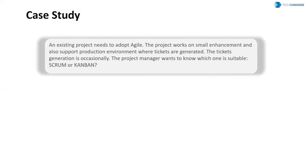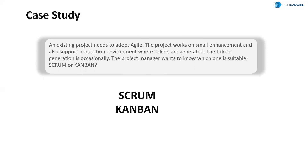Consider a scenario: an existing project needs to adopt Agile. It works on small enhancements and also supports a production environment where tickets are generated occasionally. The project manager wants to know which framework is suitable — Scrum or Kanban. If the project can plan for deliveries at regular intervals of two to three weeks and commit to that, the team can go with Scrum, where deliverables are delivered at the end of every Sprint. This gives the team breathing space, and the predictability of team capacity is high. But if the project demands frequent releases every week or has to support ad hoc requests, Kanban is the better choice — provided the team is self-organized.